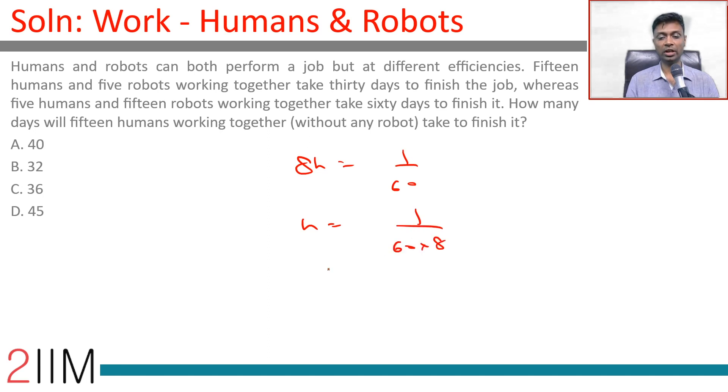15h = 15/(60×8) = 1/(4×8) = 1/32. 15 humans together can do 1/32 of the task in a day, or 15 humans working together can finish it in 32 days.